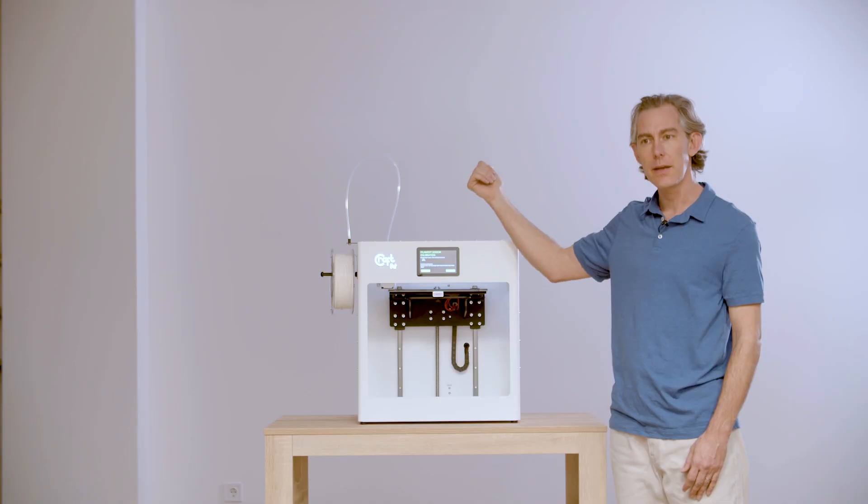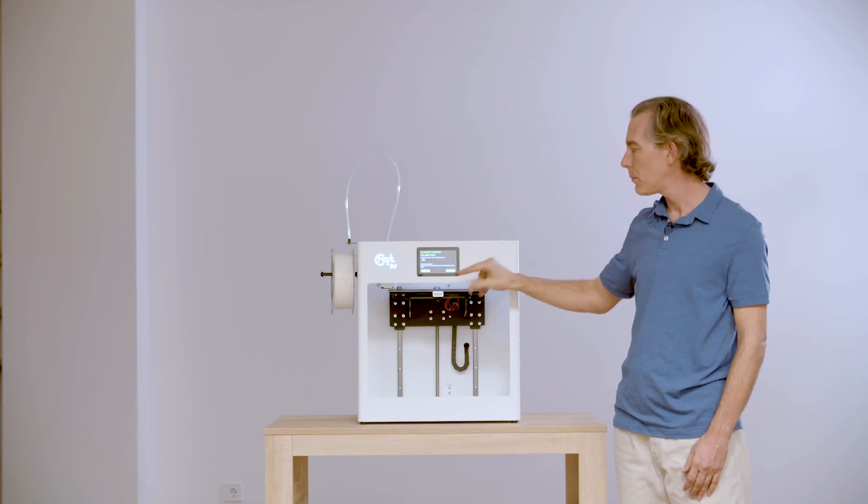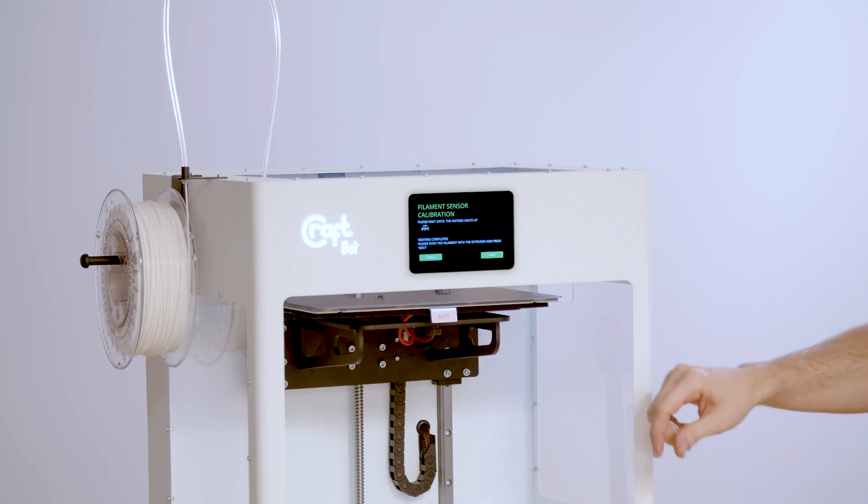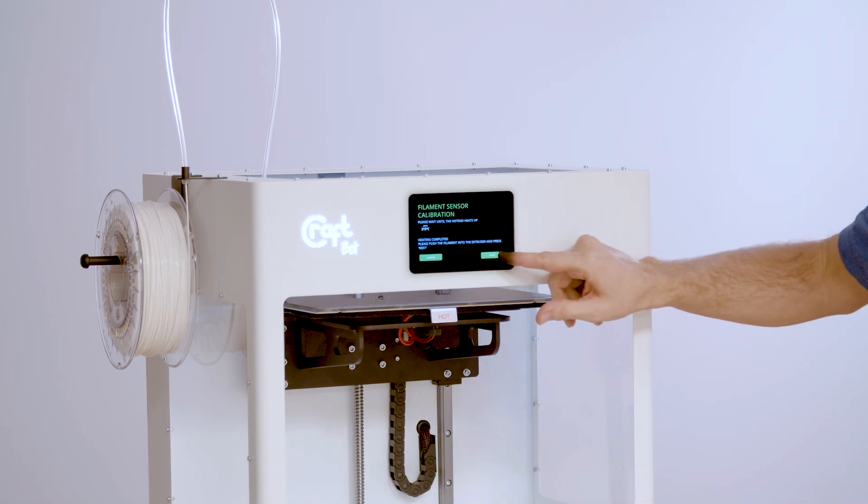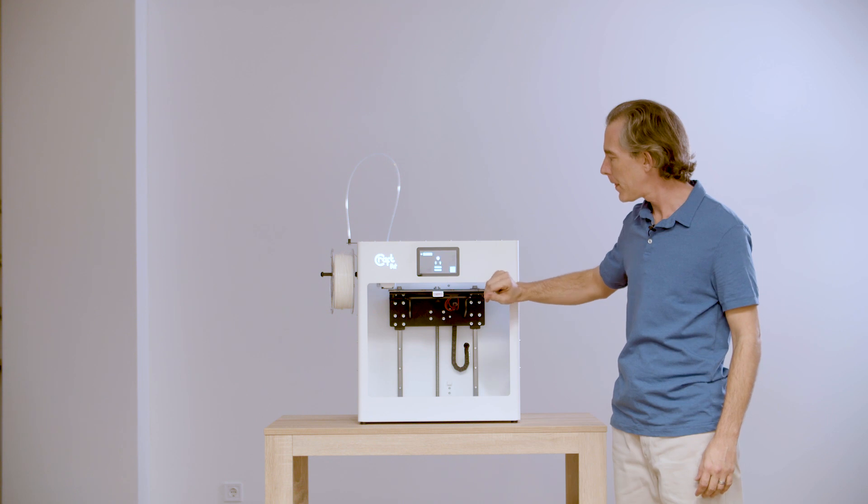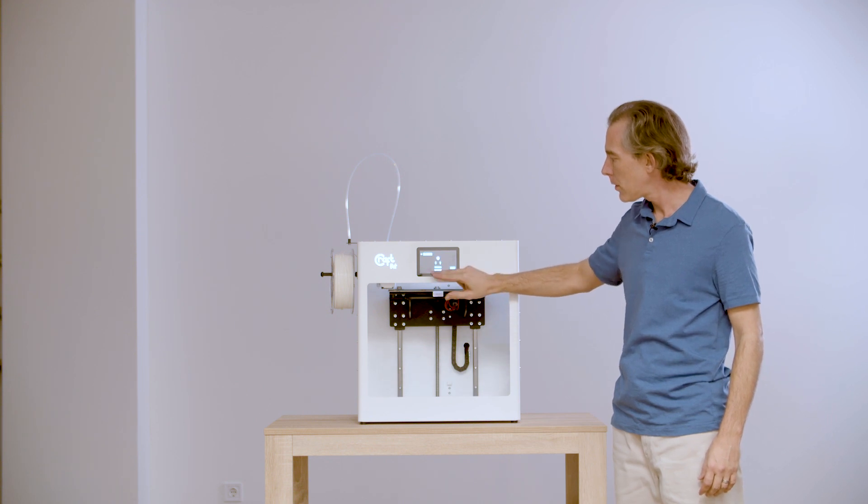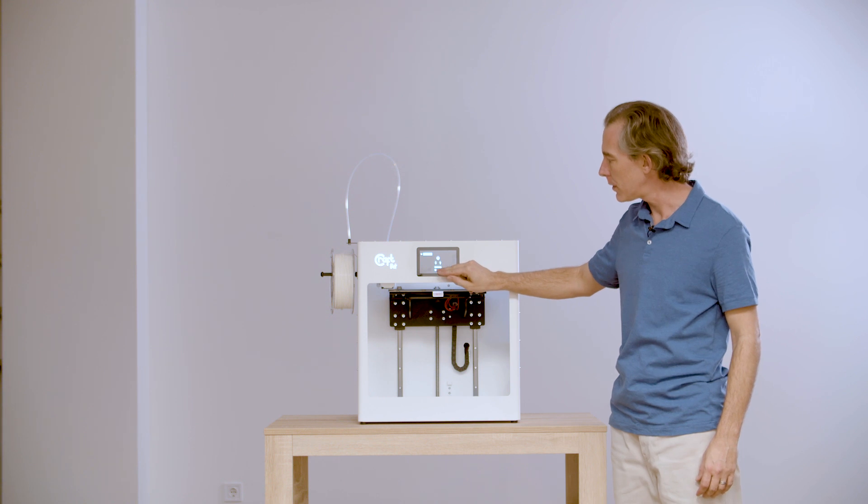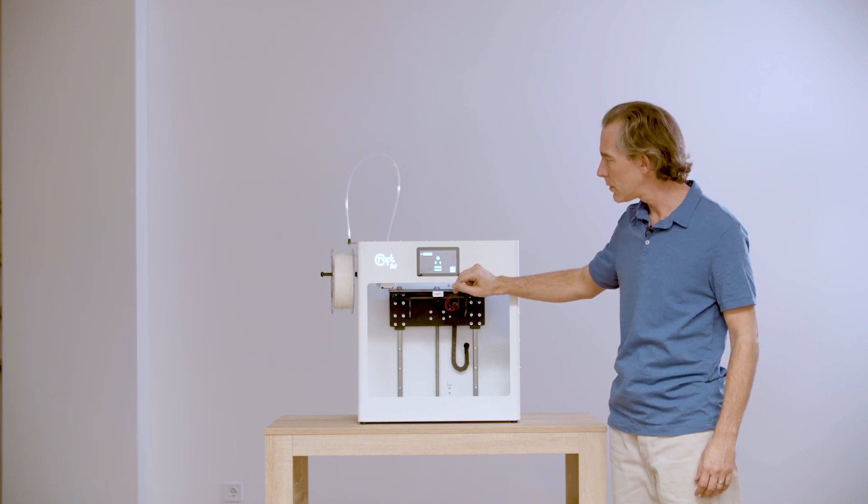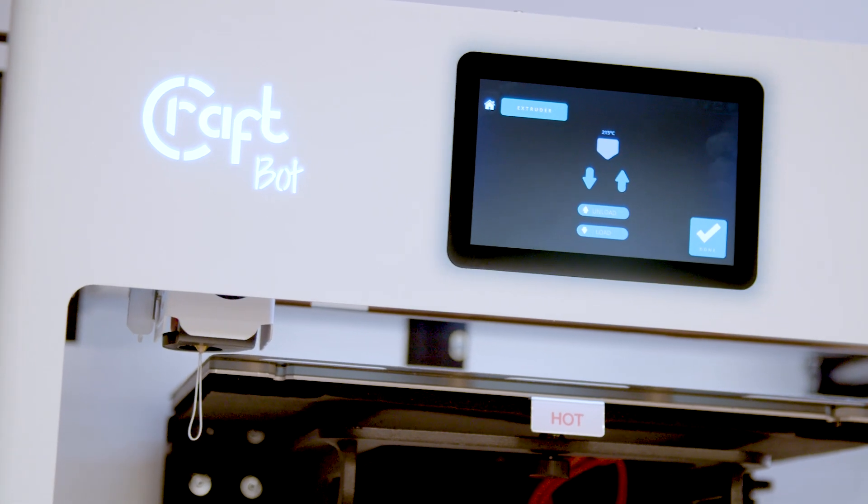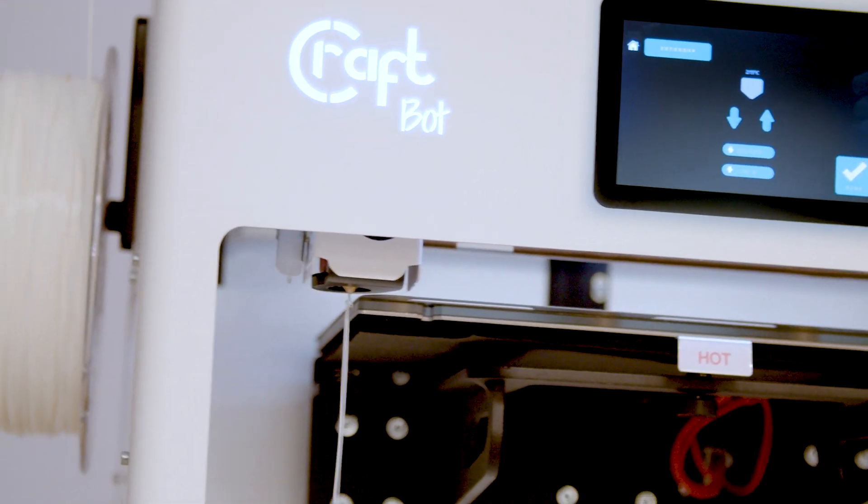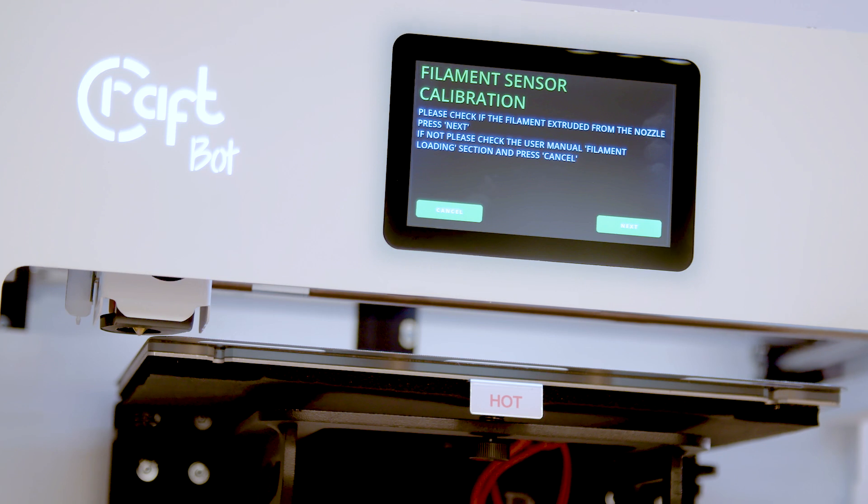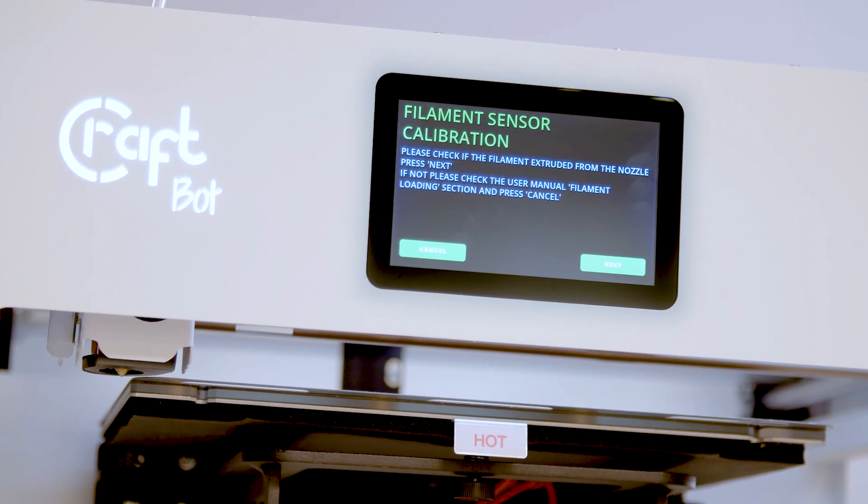We're going to load the filament into the printer itself before we hit the next button. Now we've got the filament loaded, go ahead and click next. We'll click the load button in order to bring the filament in. And once it's stopped loading, we're ready to move on and start actually calibrating the sensors.